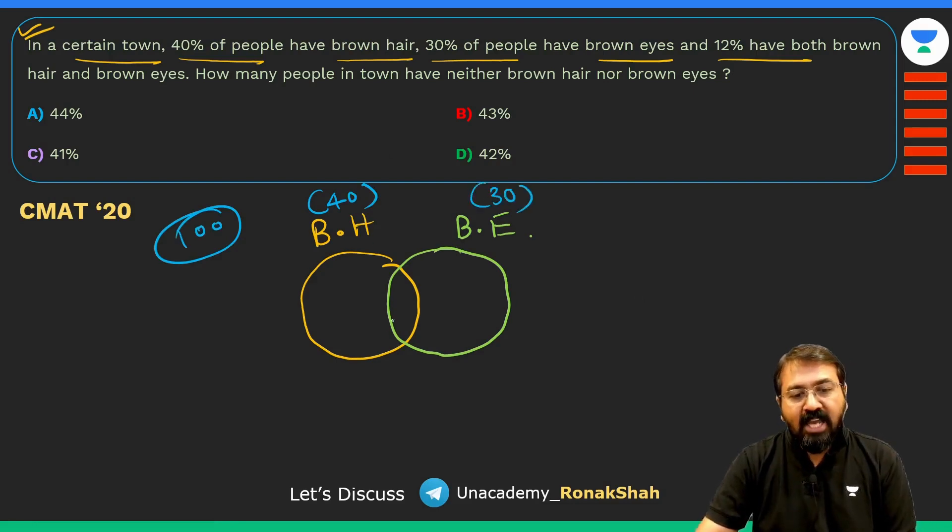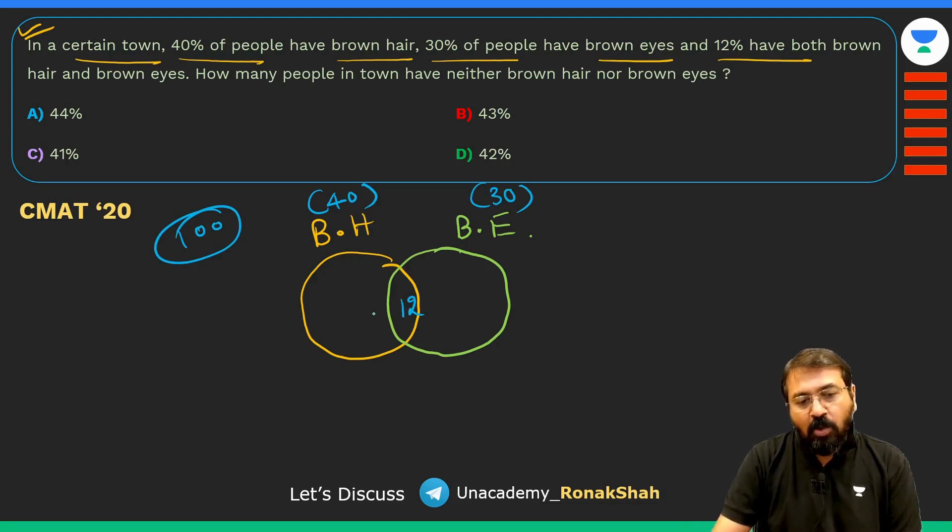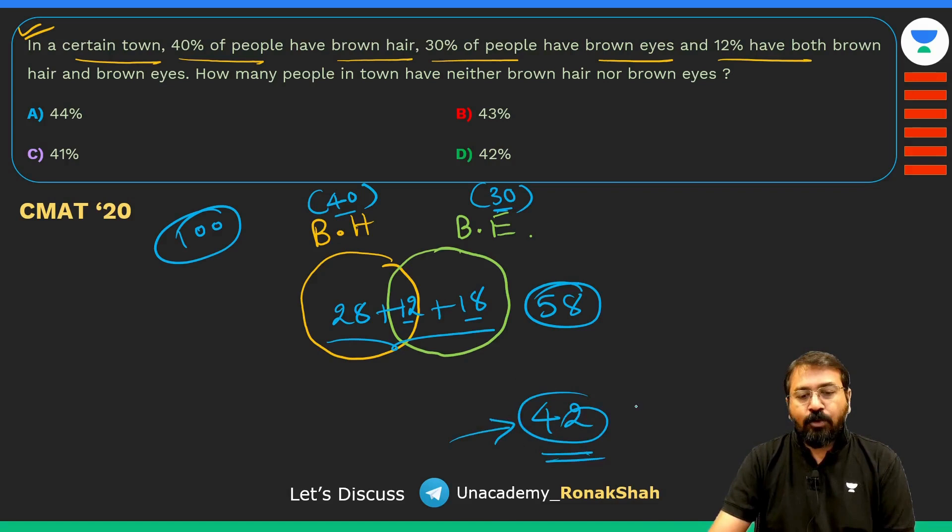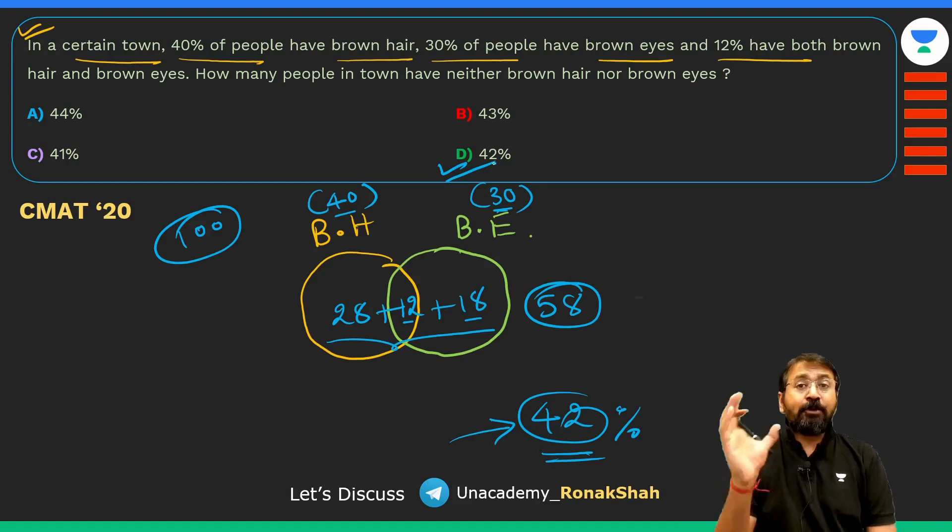How many people will have only brown hair? 40 minus 12, it's 28. How many people will have only brown eyes? 30 minus 12, so it's 18. How many people have at least one of brown hair and brown eyes? It's 28 plus 12 plus 18, so it's going to be 58. That means remaining 42 do not have any of this, so our answer is 42%. Out of 142, it's 42%, so you can tick mark option D.